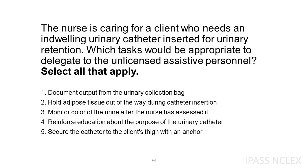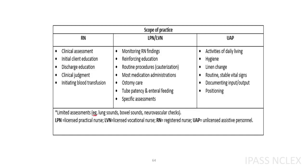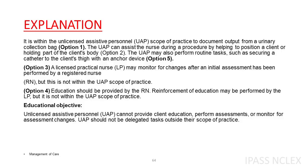Correct answer. It is within the unlicensed assistive personnel, UAP, scope of practice to document output from a urinary collection bag, option 1. The UAP can assist the nurse during a procedure by helping to position a client or holding part of the client's body, option 2. The UAP may also perform routine tasks, such as securing a catheter to the client's thigh with an anchor device, option 5.